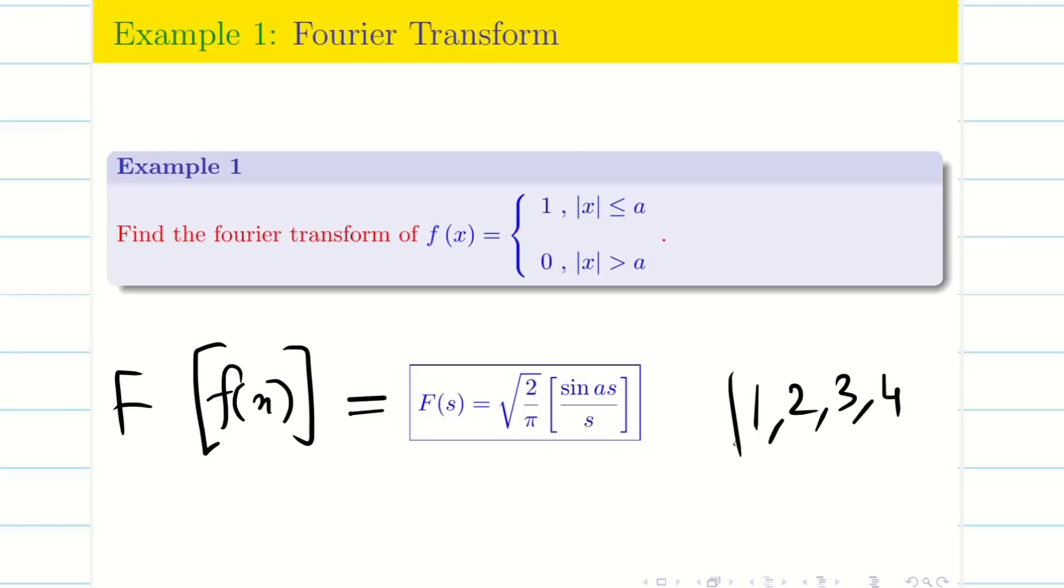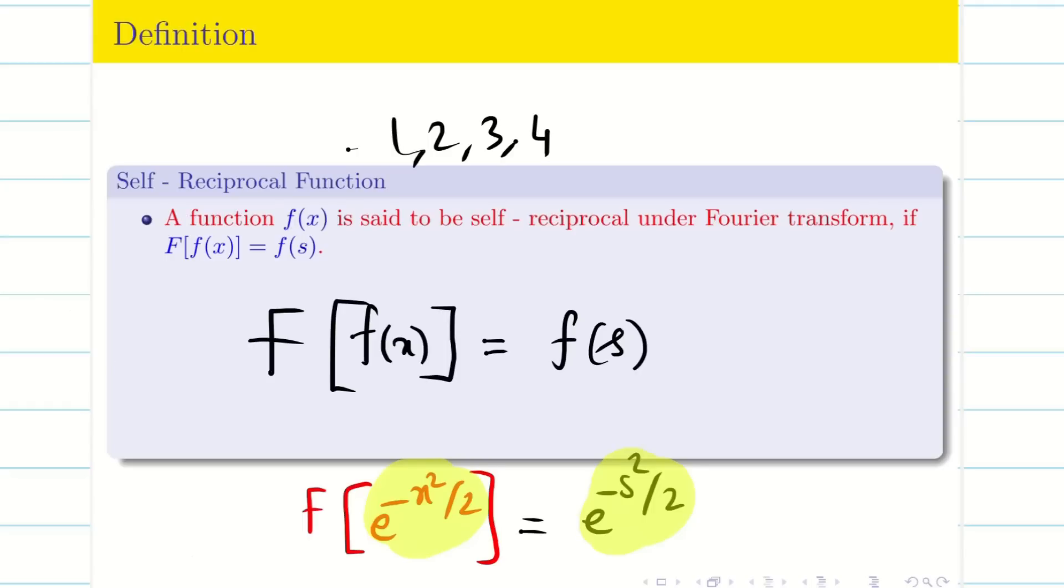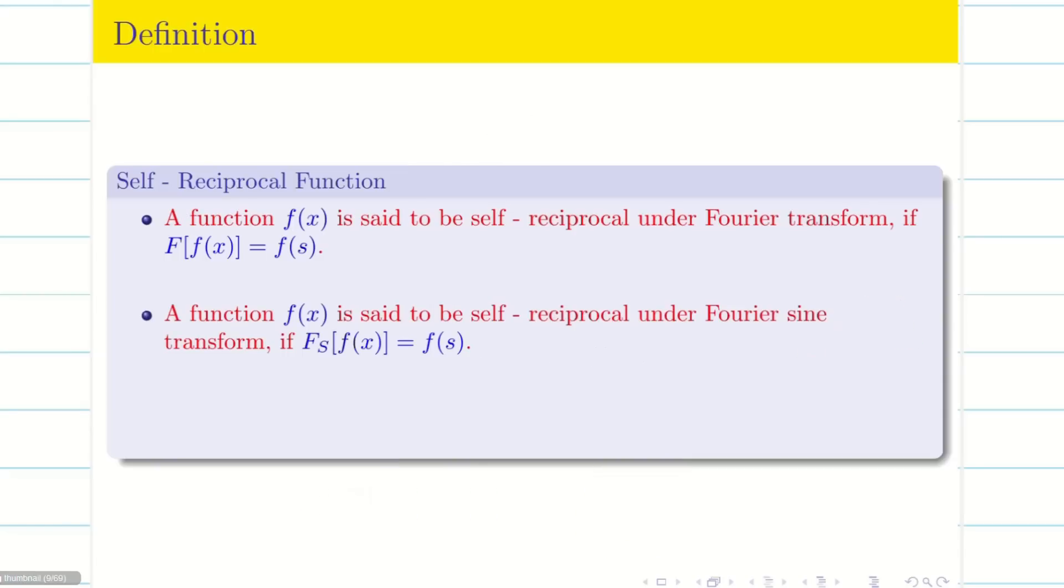So examples 1, 2, 3, 4 cannot be self-reciprocal functions under Fourier transform. The one and only function which is self-reciprocal under Fourier transform is e to the minus x squared by 2. And we can define self-reciprocal functions under Fourier sine transform as well as Fourier cosine transform.